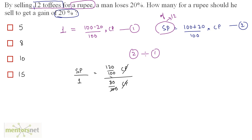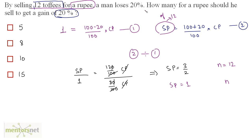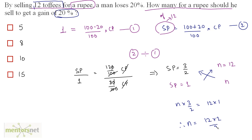The cost price terms and hundreds cancel out, giving SP equals 120/80, which simplifies to 12/8, and dividing by 4 gives 3/2. So when the selling price is 3/2 rupees, the number of toffees sold is 12. For selling price of 1 rupee: n times 3/2 equals 12 times 1, so n equals 12 times 2/3, which is 8. So 8 toffees should be sold for a rupee to get a gain of 20%. Option B is the correct answer.